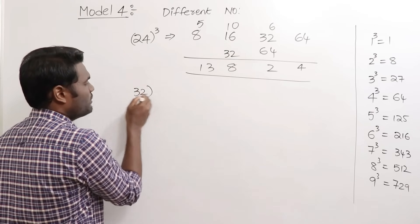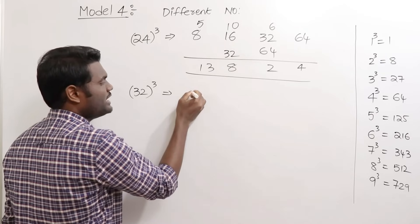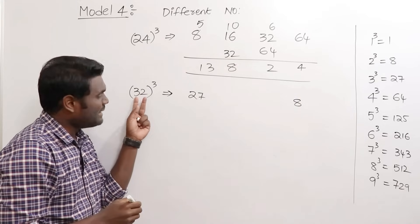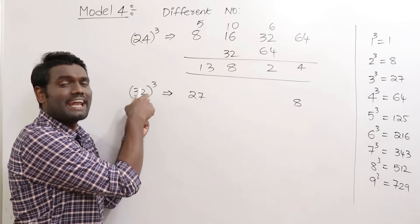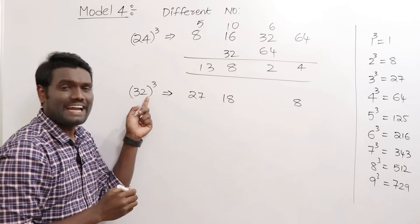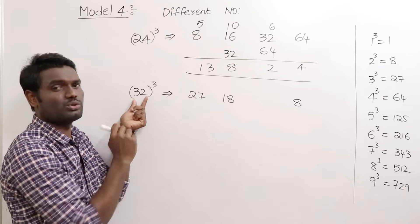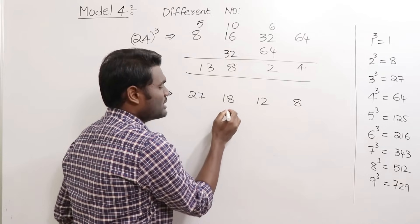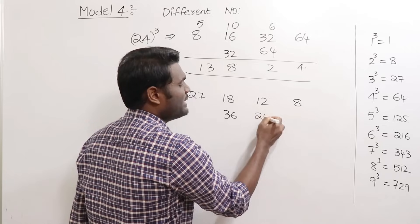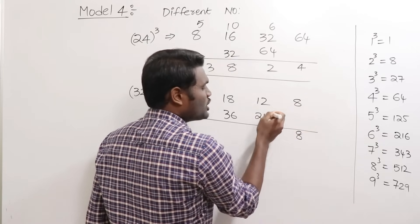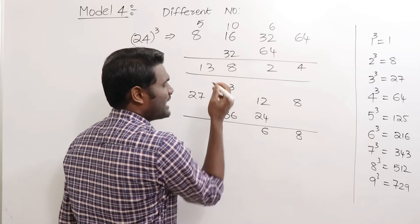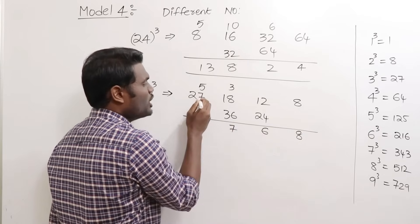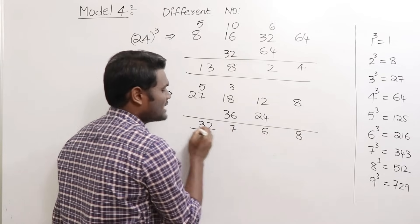Let's try 32 cubed. Cube of first digit: 3 cubed is 27. Cube of second digit: 2 cubed is 8. Square of first digit times second digit: 3 squared is 9, times 2 is 18. Square of second digit times first digit: 2 squared is 4, times 3 is 12. Leave first and last, double the middle: double 18 is 36, double 12 is 24. Adding: 8; 24 plus 12 is 36 — write 6, carry 3; 36 plus 18 is 54, plus 3 is 57 — write 7, carry 5; 27 plus 5 is 32. So 32 cubed equals 32768.